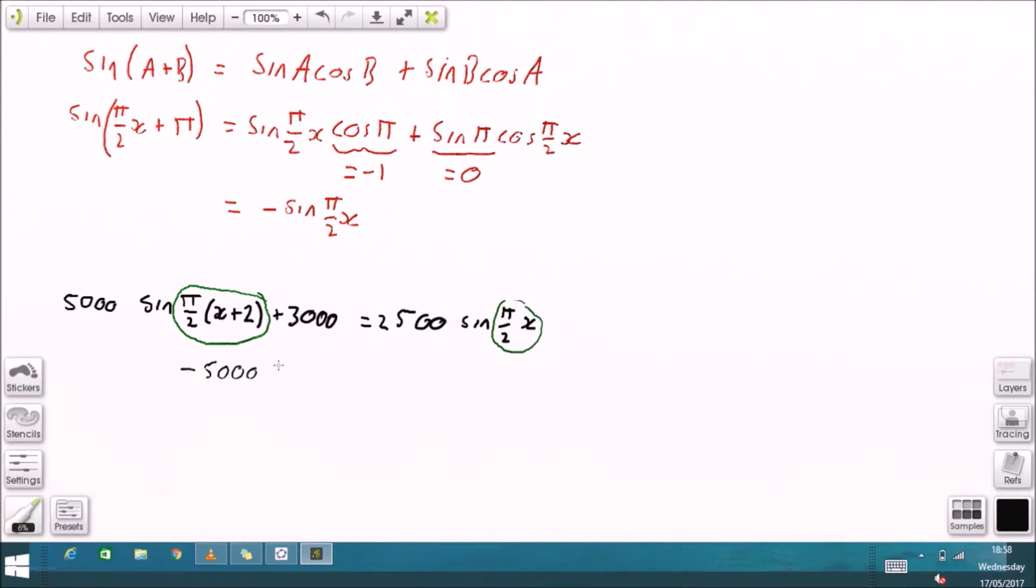So the left hand side of this equation can be written as negative 5000 sine π over 2x plus 3000, which is equal to the right hand side. And now both these angles are the same.